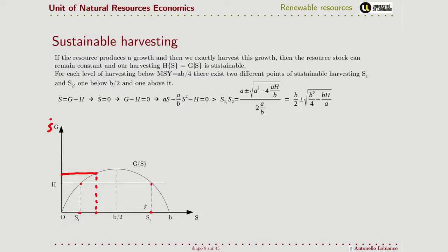Well, we saw this case. You may have saw this case in an exercise, but let's analyze it together. First, let's see how the variation in the stock is given by the growth of the resource less what is harvested. And if you want a steady state, sustainable steady state where the stock doesn't change, of course, this must be equal to zero. From here, we replace G with its equations and we solve by S.